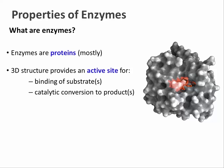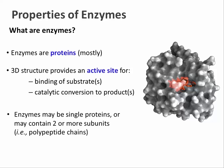Many enzymes are made from a single polypeptide chain; others have two or more subunits, that is, two or more separate polypeptide chains. Sometimes this is because the reaction is complicated and several substrates need to be held in place. Sometimes having more than one subunit allows for more precise control of enzyme activity.